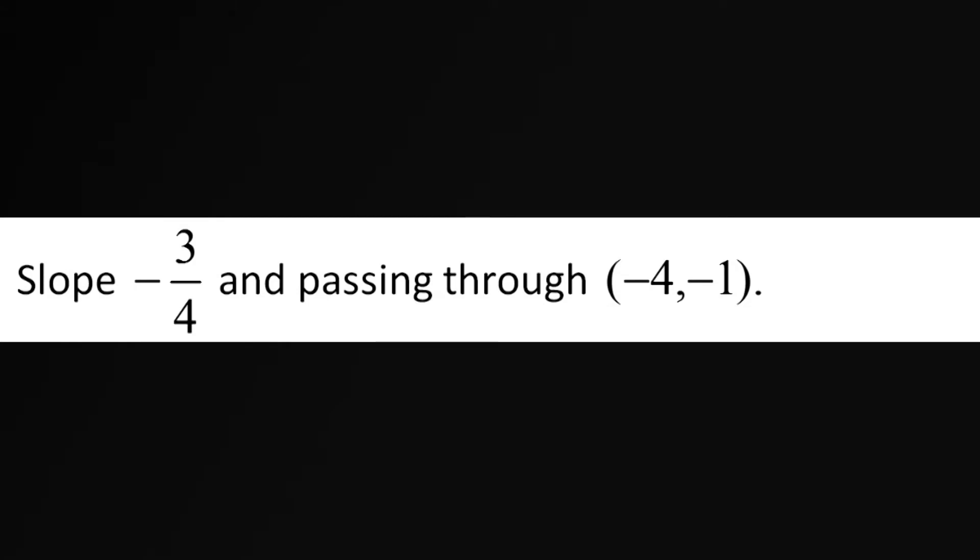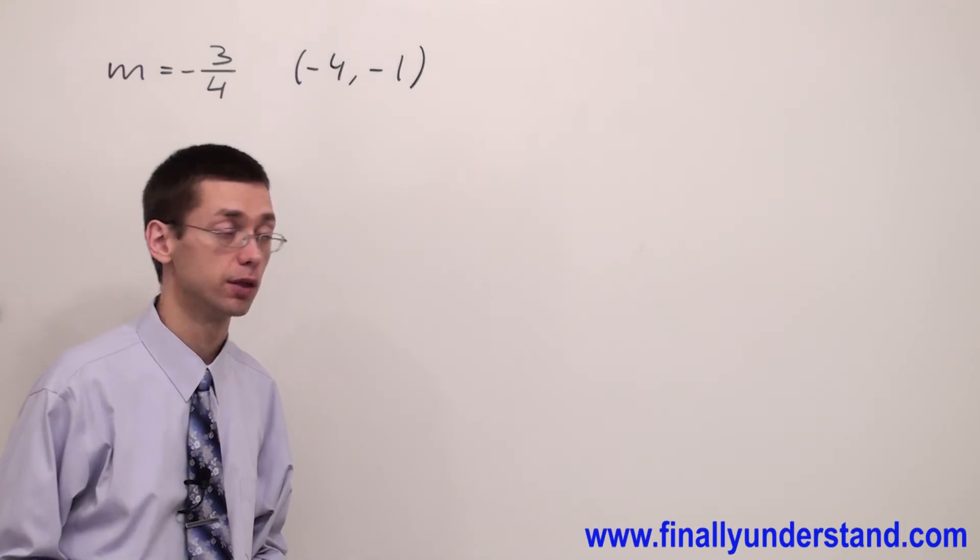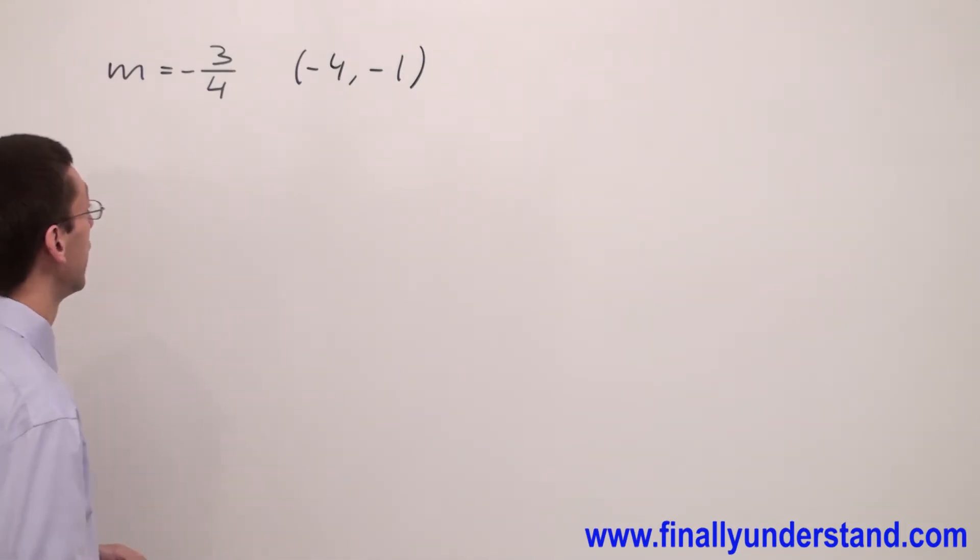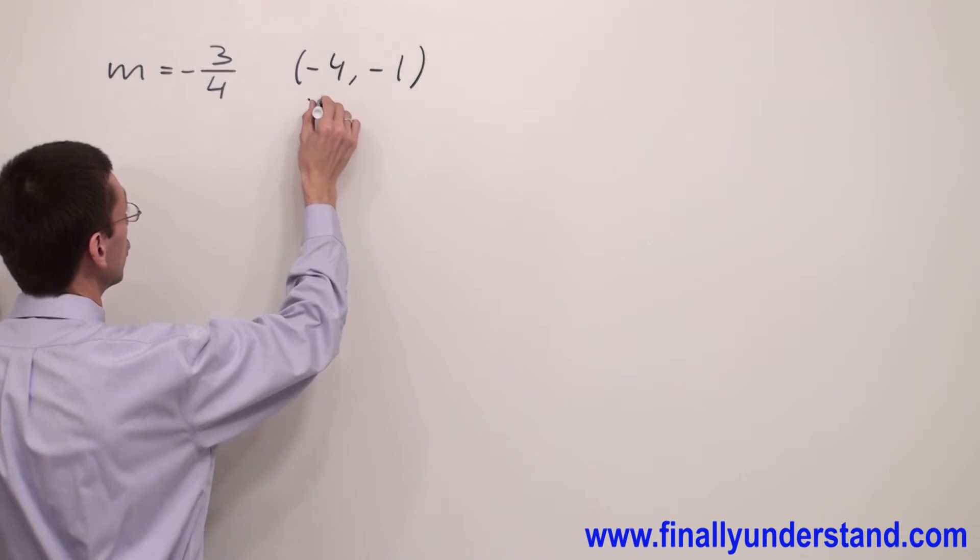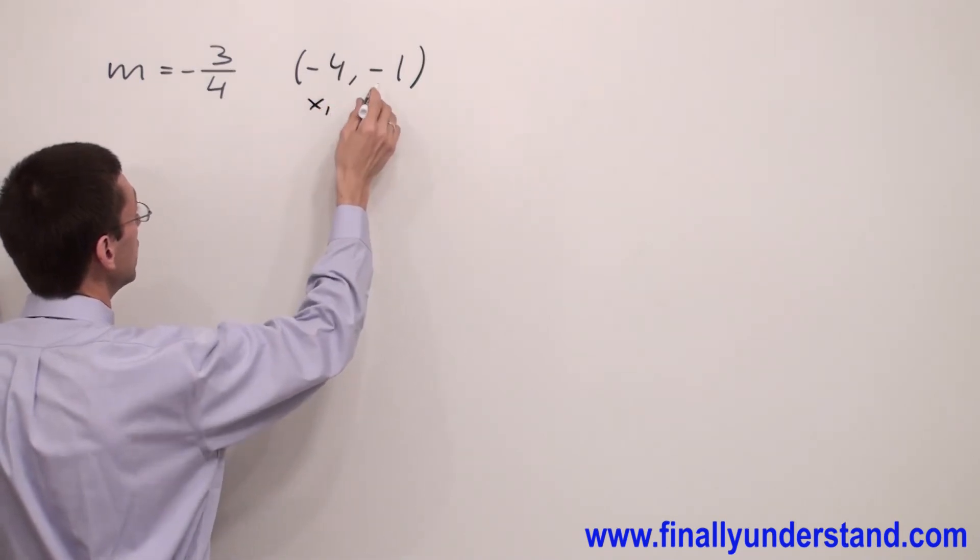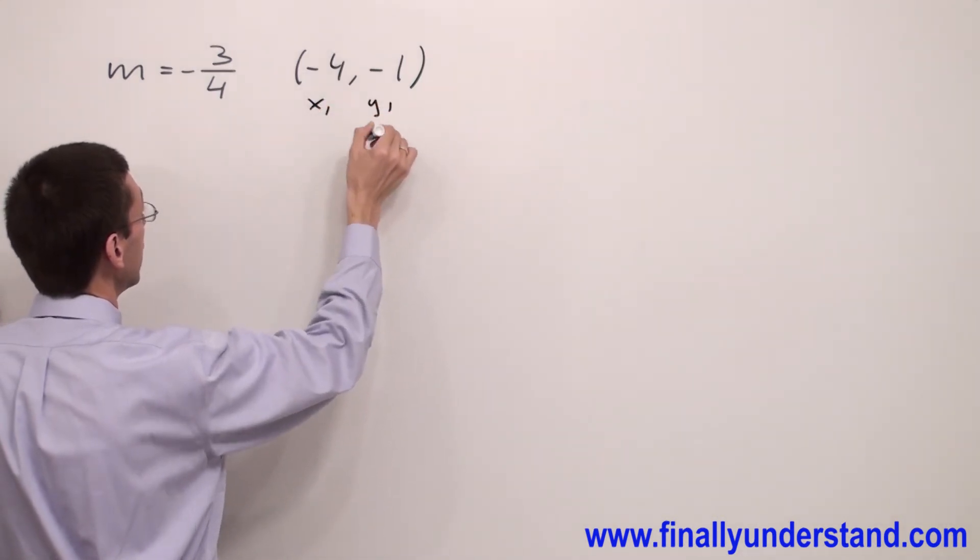This time we have given slope and point. We're supposed to find the equation of a line. Don't forget that this is your x coordinate, I'm going to call this x1, and this is y coordinate y1.